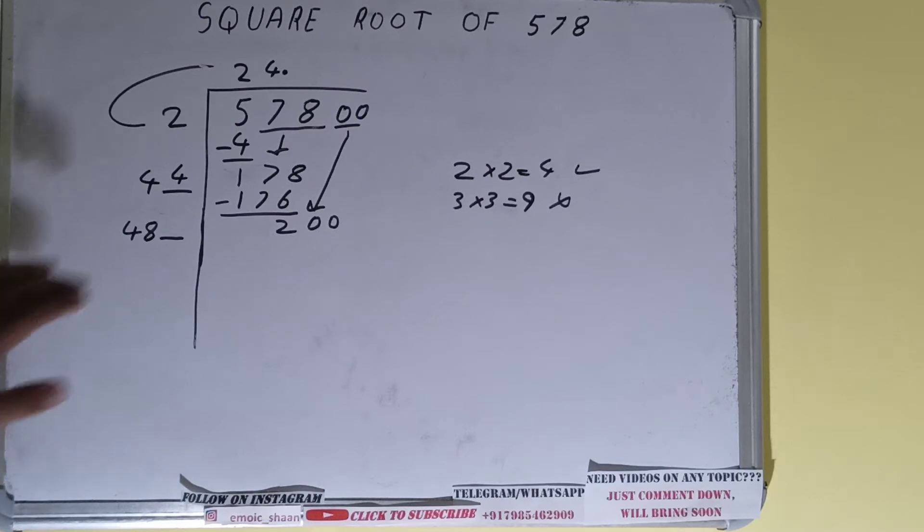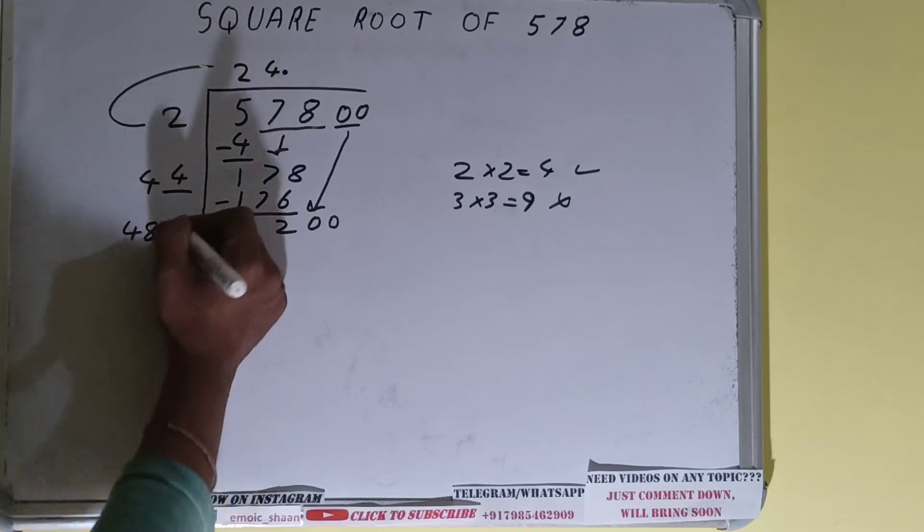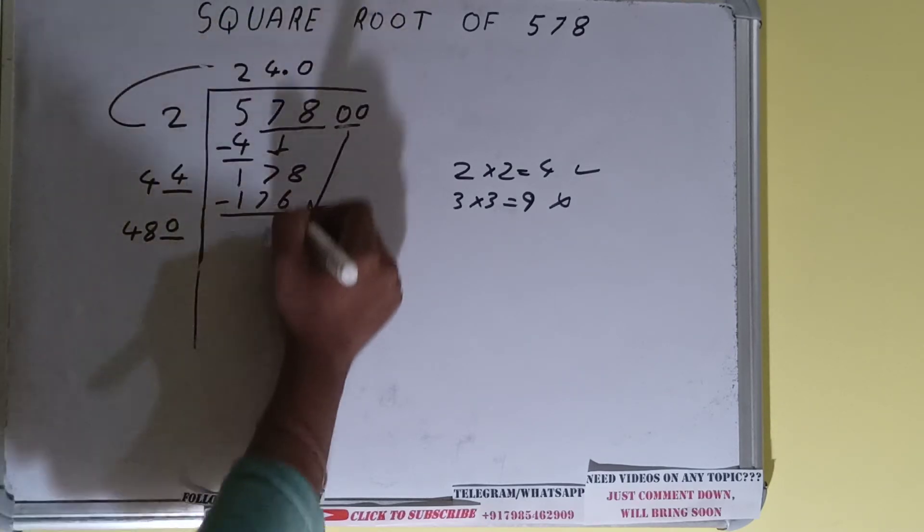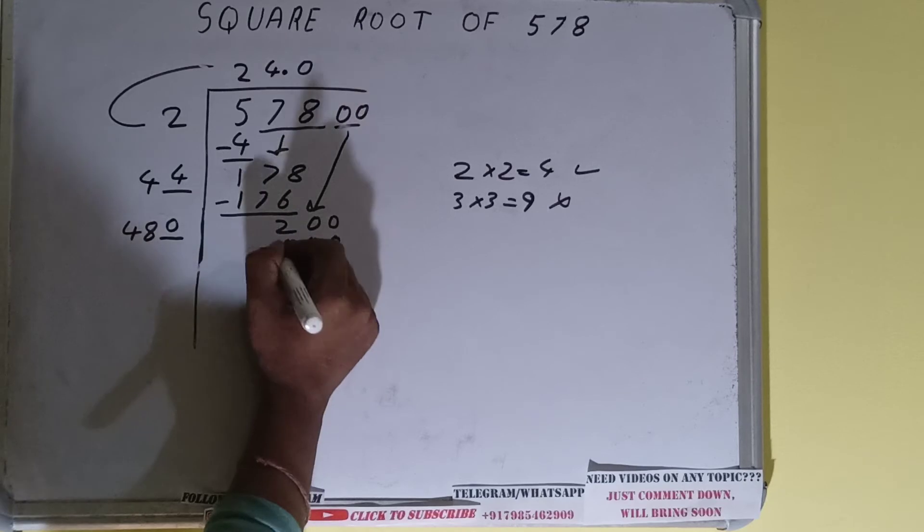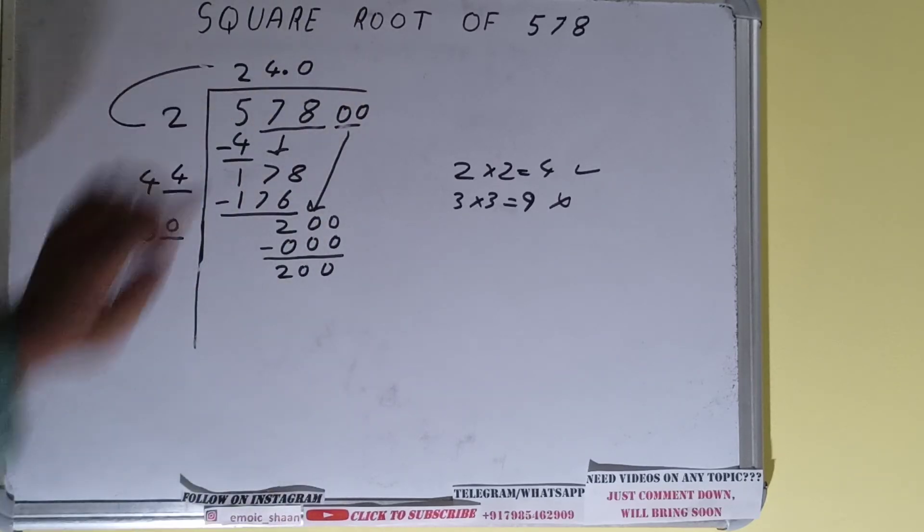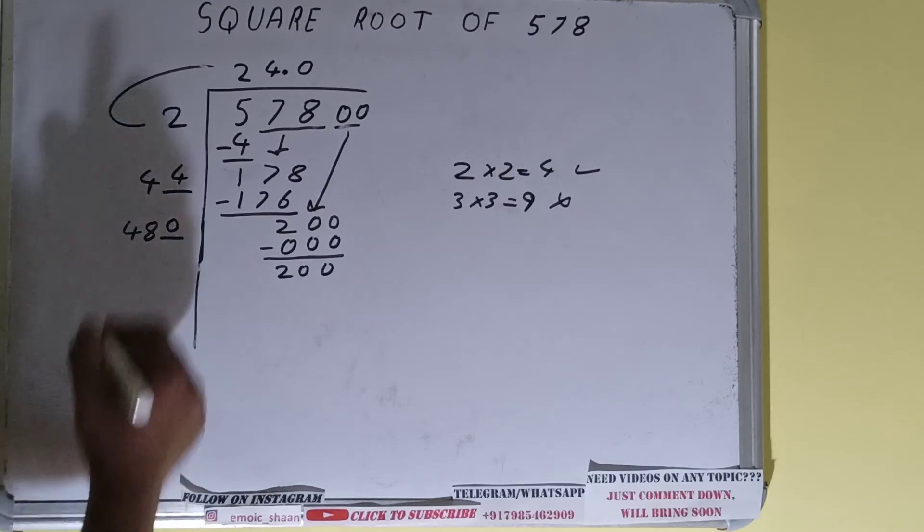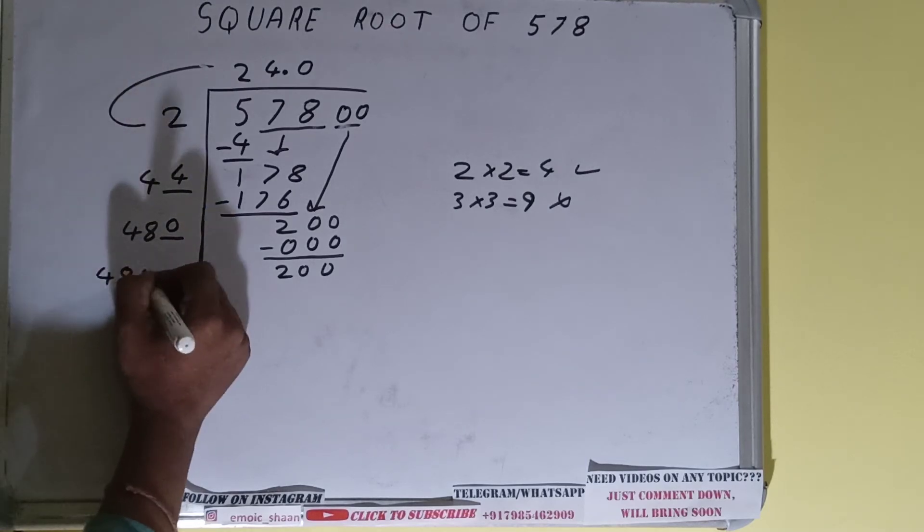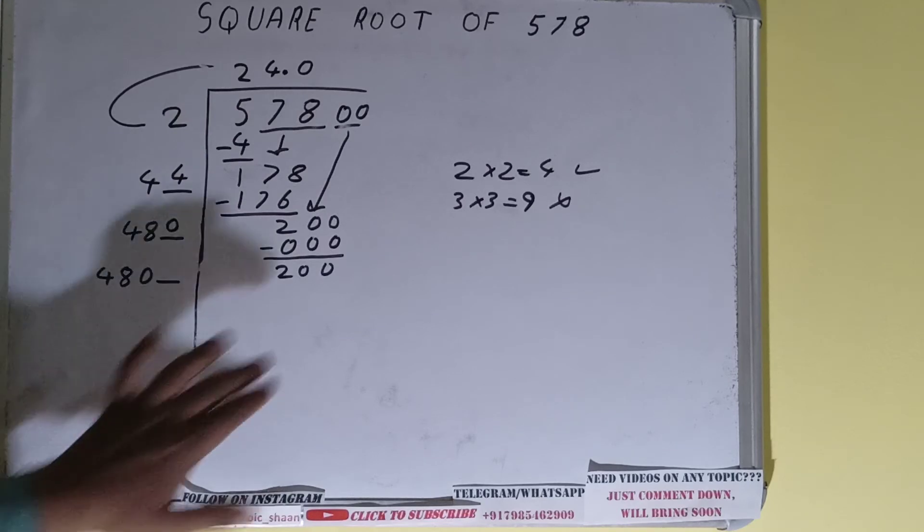Now whatever number we write here we have to write here also. So one time will not work. We have to use 0. 0 here and 0 here, subtract and again 200 will be left. Now 480 into 0 we did, so add both. So 480 plus 0 will be again 480 and 1 digit extra.